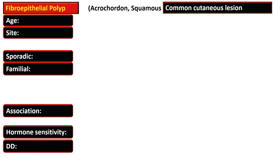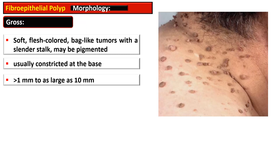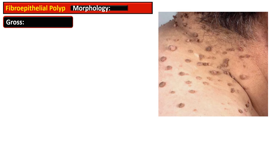The main differential diagnosis includes pedunculated seborrheic keratosis, dermal or compound melanocytic nevi, solitary neurofibroma, and molluscum contagiosum. Morphologically, they are soft, flesh-colored or slightly pigmented, bag-like tumors with a slender stalk.